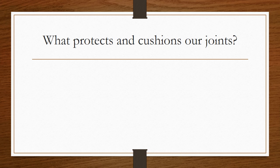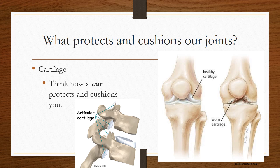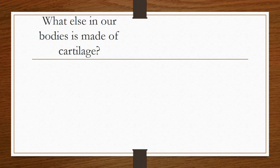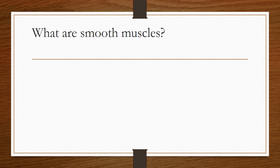You learned about tendons and ligaments, but what coats the ends of your bones to protect and cushion them from neighboring bones? It's your cartilage. Can you see the cartilage on the ends of the knee bones? Imagine how your knee would feel if your cartilage looked like that second knee. You can remember that cartilage protects and cushions your joints the same way a car protects and cushions you when you travel. Do you know what else in your body is made of cartilage? Two things — your ears and your nose. Go ahead and mush your ears and nose around to feel the cartilage.